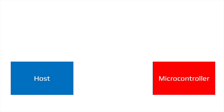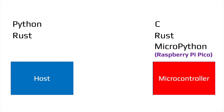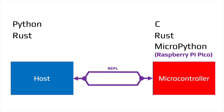There are several implementations of MIN. On the host side there's a Python implementation and a Rust implementation. On the embedded side there's an embedded C implementation and also a Rust implementation. For the Raspberry Pi Pico there's a special MicroPython implementation that provides a Python API for MIN on the embedded side. Because the Pico implements USB directly, the firmware adds a second virtual serial port for MIN — the first is the Python command line and the second is dedicated to MIN.